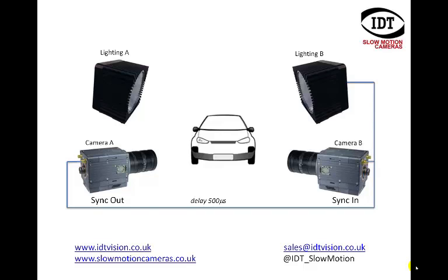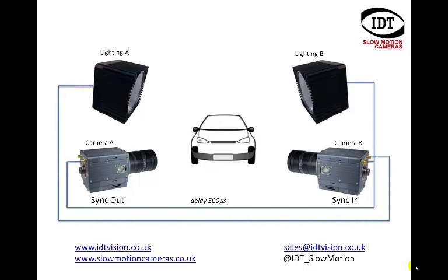Assuming an exposure time of 500 microseconds or less. If we then drive lighting A from the sync out of lighting B and introduce a similar delay, so that the lighting is now delayed by 1000 microseconds — or a thousandth of a second, or exactly one frame — we'll find that lighting A is back in sync with camera A. So this setup now shows camera A being lit by lighting A and camera B being lit by lighting B, both being invisible to the opposing light.